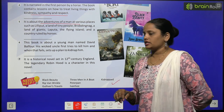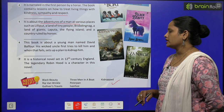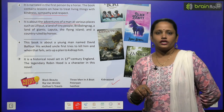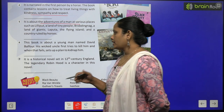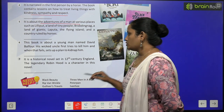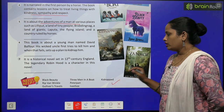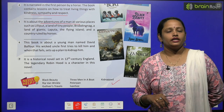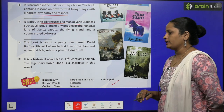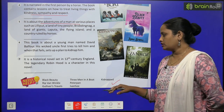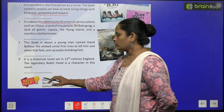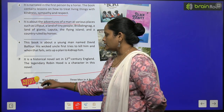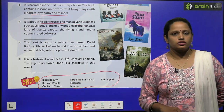It is a historical novel set in 12th century England. The legendary Robin Hood is a character in this novel and plays a main character role. What is the name, children? You have to write down the name of this book from the need help box.